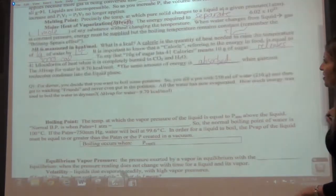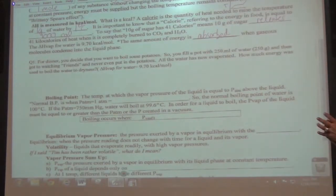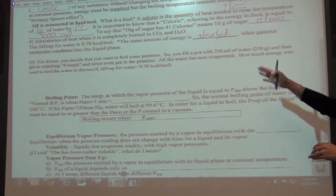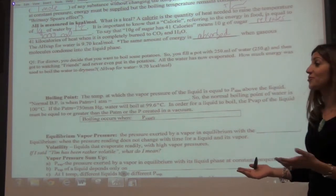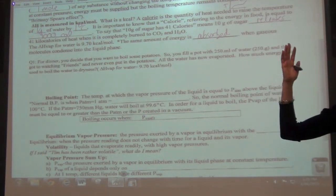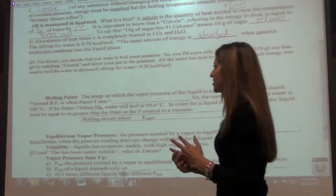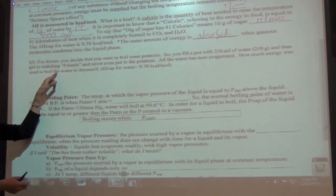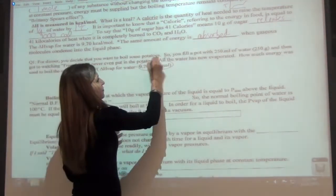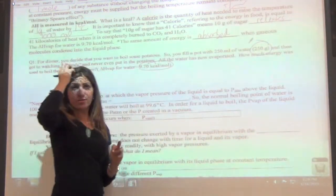For dinner, you decide that you want to boil some potatoes. So you fill a pot with 250 mils of water, 250 grams. You got to watching Friends. You never put the potatoes in. And all the water has evaporated. How much energy did it take to boil the water to dryness? And they're giving you your delta H of vape. They're also giving you grams. This is a review question.